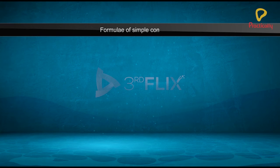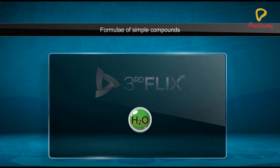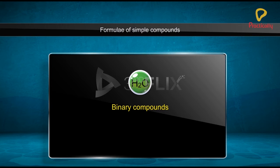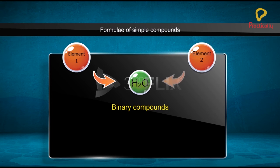Formulae of simple compounds are the compounds made up of two different elements. While representing the chemical formula of a compound, let us write the symbols of the constituents first, then write their valency below the symbol.